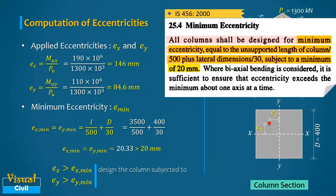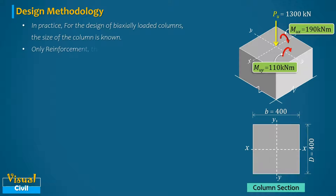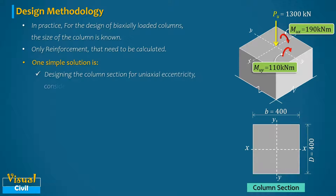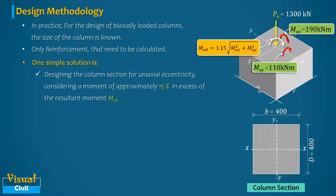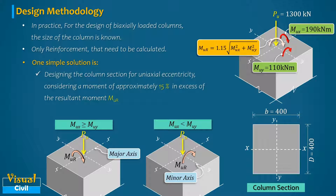In practice, for biaxially loaded columns the column size is known and only the reinforcement needs to be calculated. One simple approach is to design the column section for uniaxial eccentricity considering a moment approximately 15% in excess of the resultant moment Mur. Consider Mur = 1.15 × √(Mux² + Muy²). This resultant bending moment should act about the major axis if Mux ≥ Muy, otherwise about the minor axis. The reinforcement may be assumed distributed equally on all sides of the section.